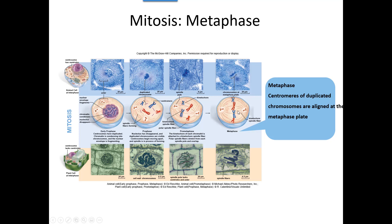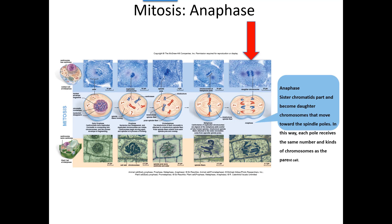Anaphase is when those sister chromatids are yanked apart. They were X-shaped duplicate chromosomes, but the spindle fibers start pulling them to opposite sides of the cell — you can almost picture them waving to each other as they separate.